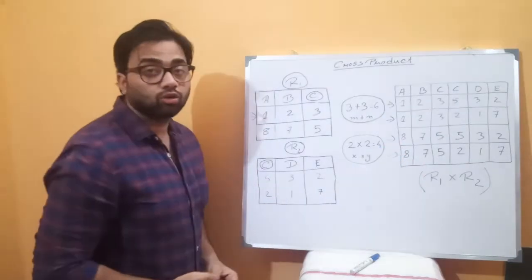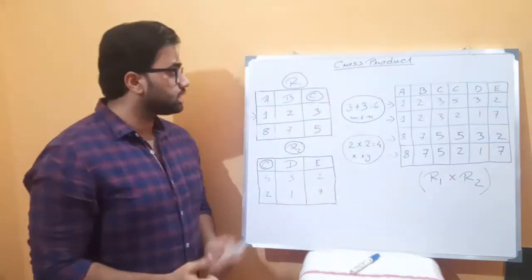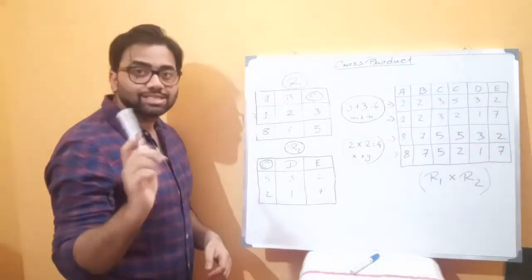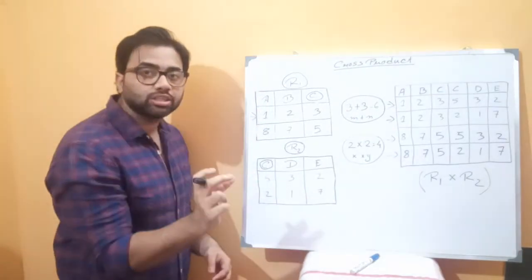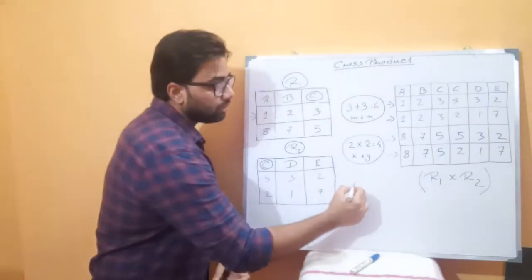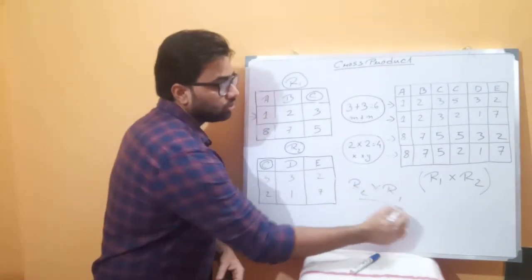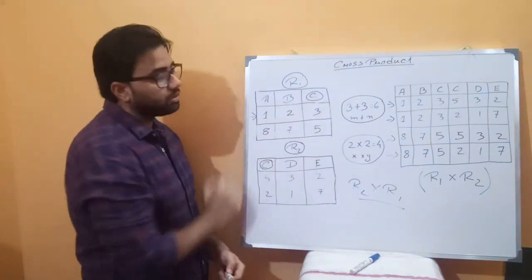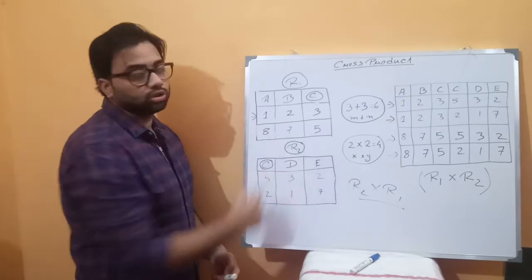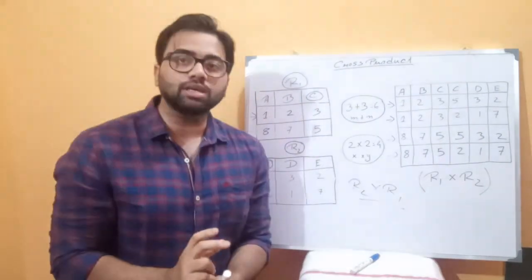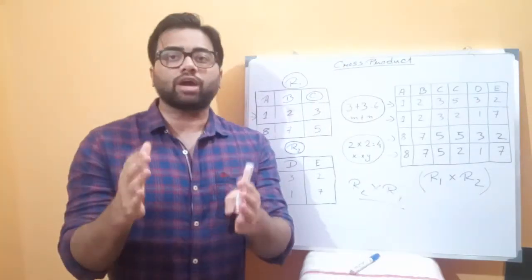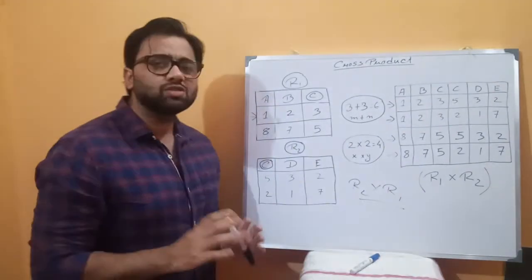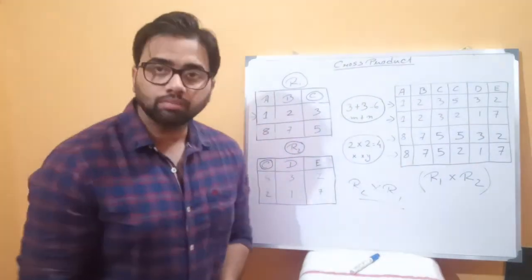This is how the second table's second value is used. R1 combined with R2 gives a shared result table — the product of the individual tables. This is all about cross product in relational algebra. It is very simple.